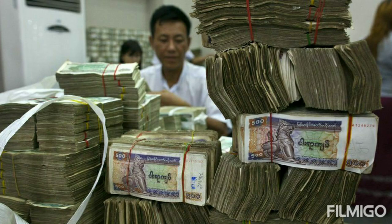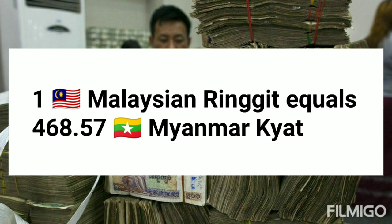So today, 1 Malaysian Ringgit equals 468.57 Myanmar Kyat. 1 Malaysian currency rate in Myanmar currency, 468.57 Kyat.